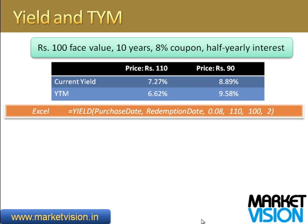In Excel, the YIELD formula takes the following inputs: the date of purchase (assuming you get the bond today), the redemption date (the end date, 10 years later), 8% which is the coupon on the bond, the market value — 110 in this case, or whatever the market price is at any given point in time — 100 rupees which is the face value you receive on maturity, and 2 for the number of coupon payments per year (annual is 1, quarterly is 4, half-yearly is 2).